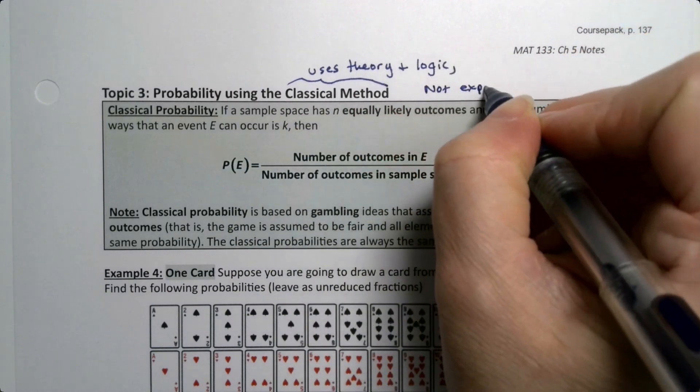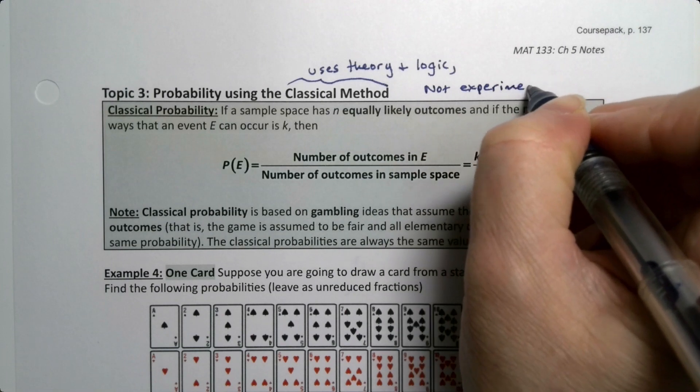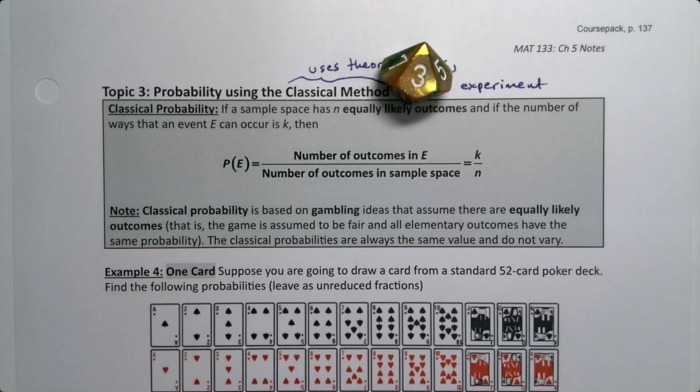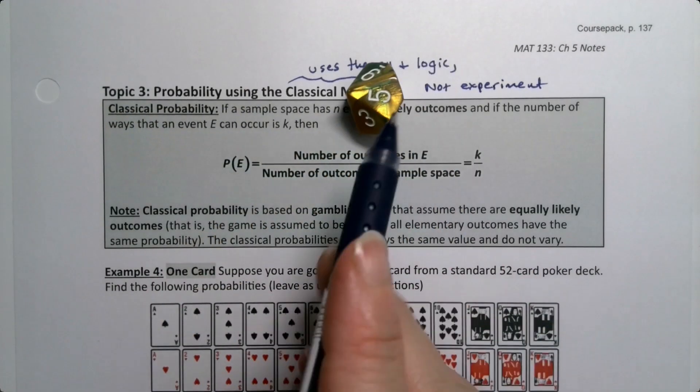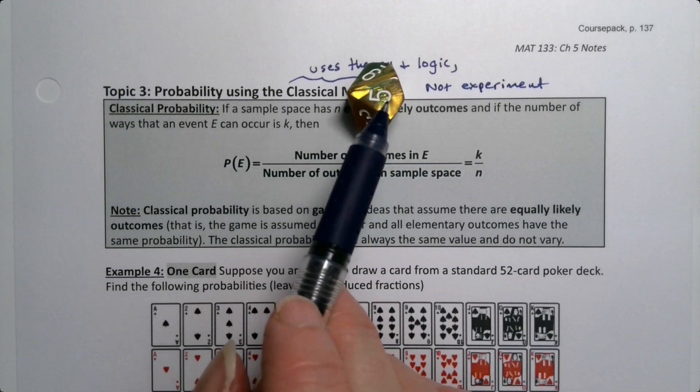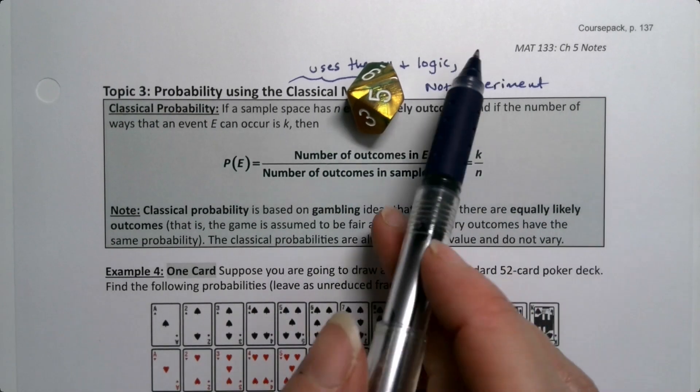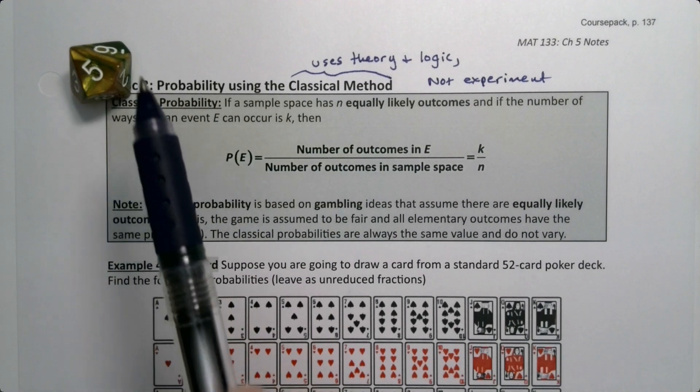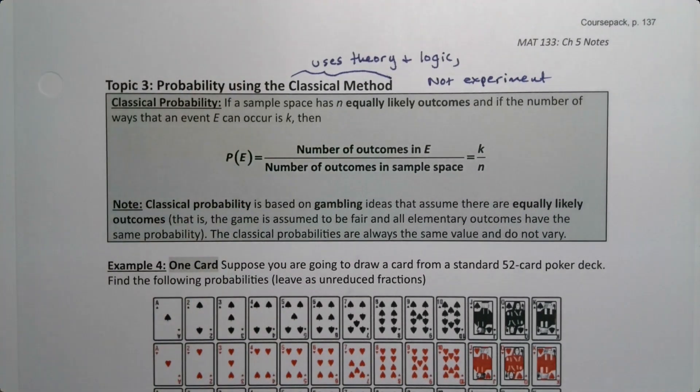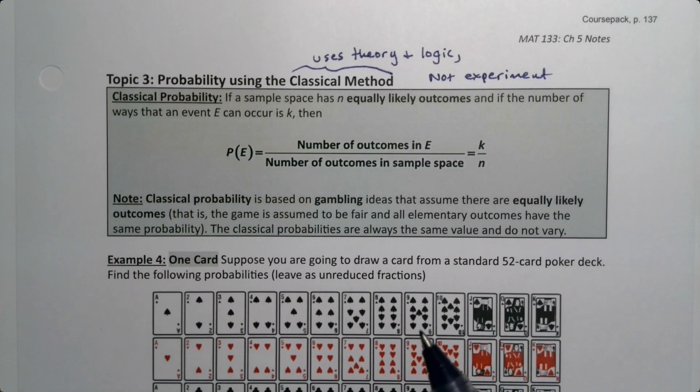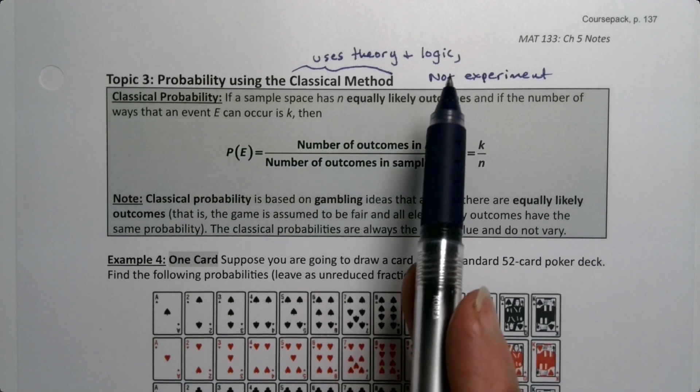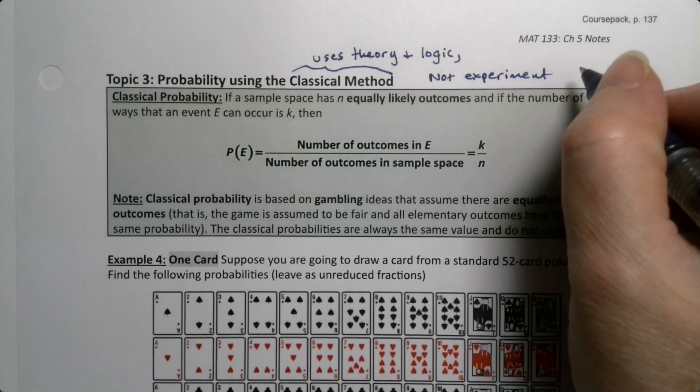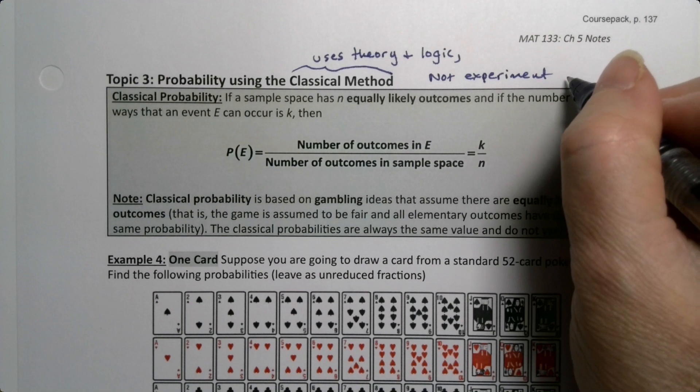So you don't actually roll the dice, for example, you just kind of look at the dice, contemplate the dice and think, five is one out of the ten sides, so it's one out of ten. So it's what we did when we did the dice and actually the roulette as well. We didn't actually spin a roulette wheel, we just kind of looked at it and thought about it. So we use this method a lot.